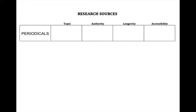Next is periodicals. Periodicals can be very specific to their topic because they aren't meant to last a great deal of time. Their authority is usually a high specialist, and their longevity is short because we expect a periodical to give us the newest information possible on a topic — we look at the date to make sure we're getting the newest information. Periodicals are text-based, but they're usually written in a format that's a little more approachable and conversational. We still have to do our own searching to get the information we want.